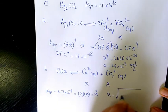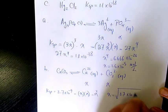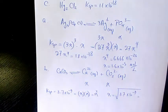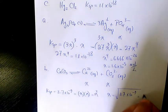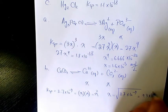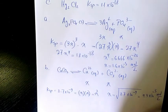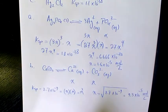So X will be the square root of 8.7 times 10 to the power of negative 9. That will be 9.3 times 10 to the power of negative 5 mole per liter. So that's going to be the molar concentration.